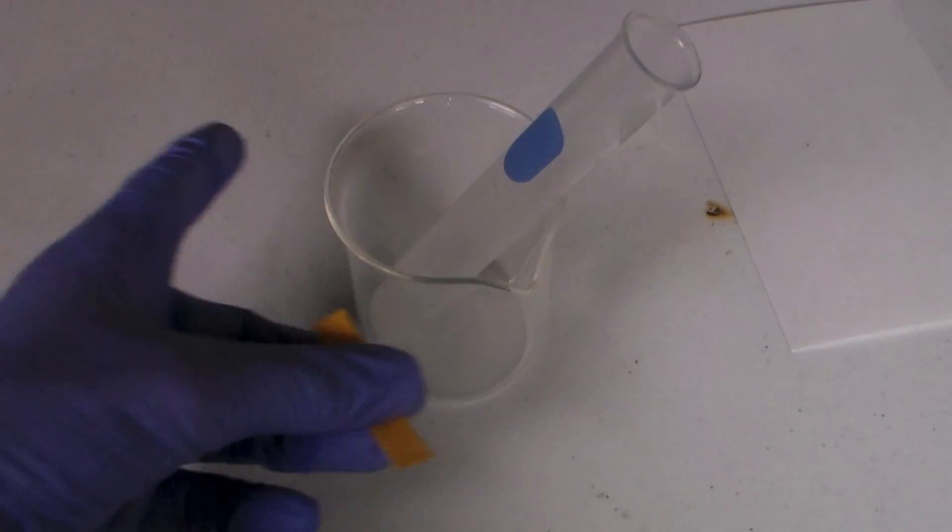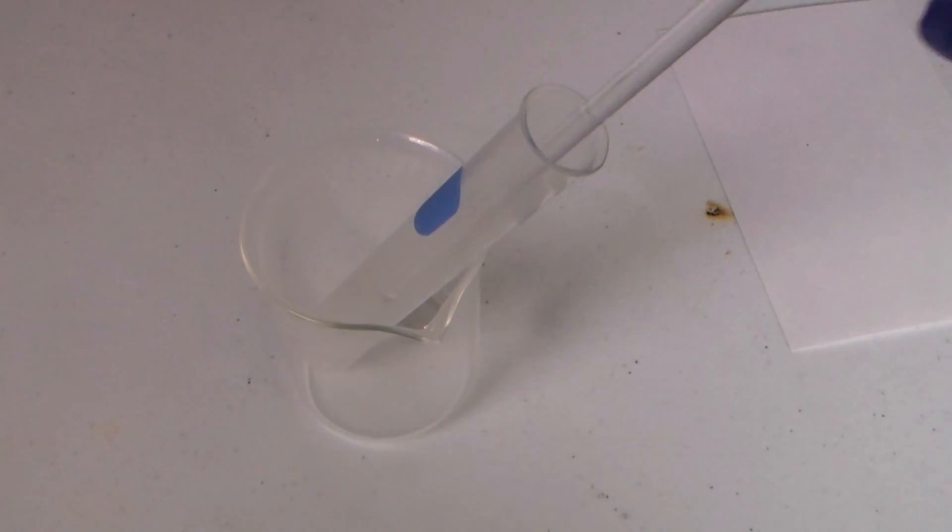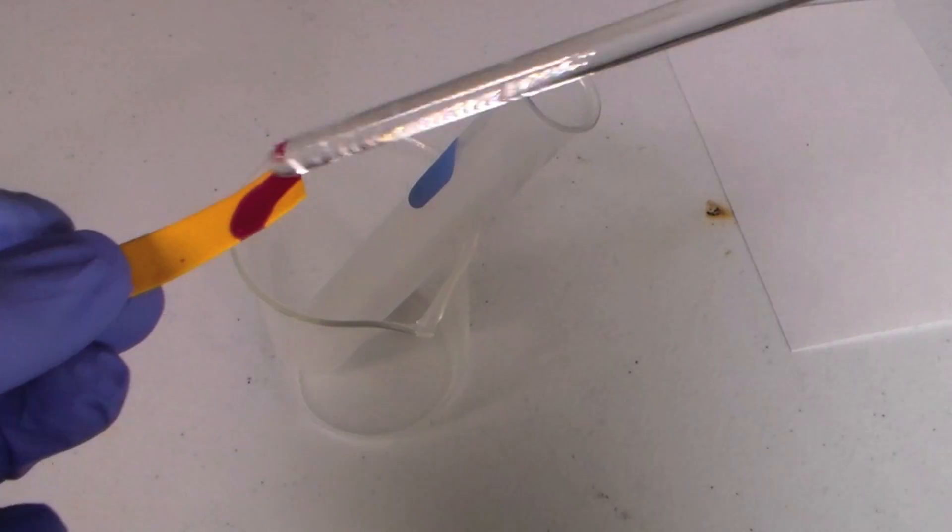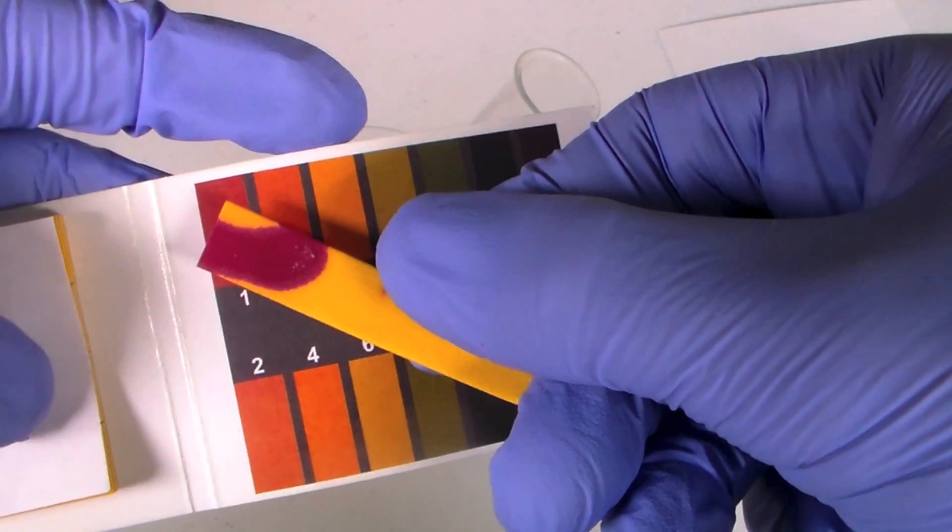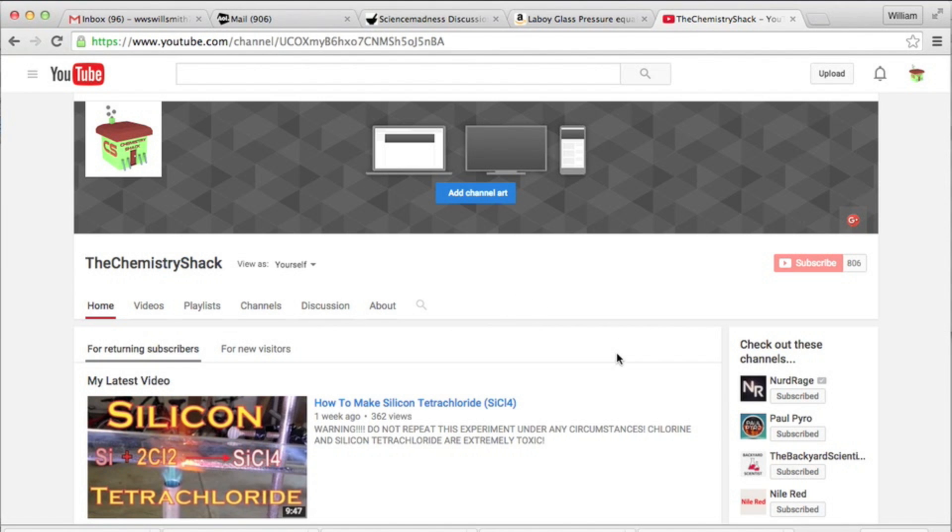We can show that hydrochloric acid is produced by testing the pH of the solution. As you can see, the solution turns the litmus paper red which means it's acidic. Well that's it for this video.